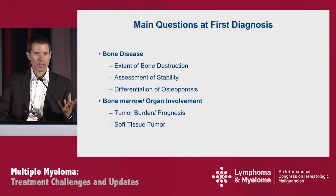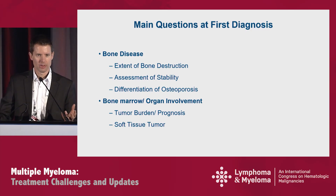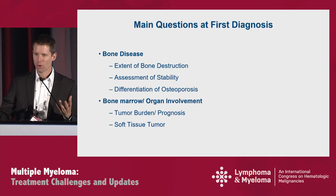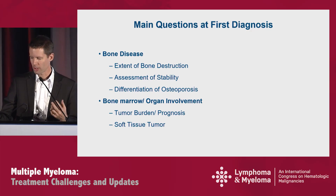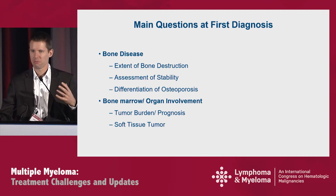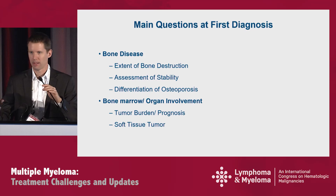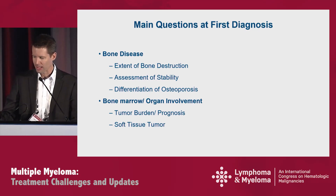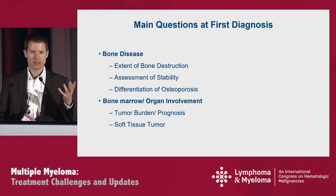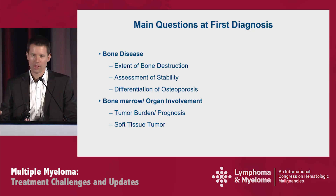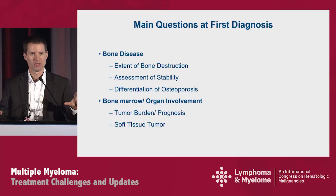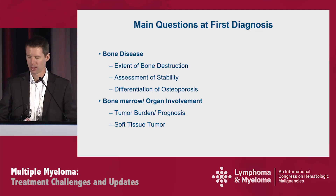What are the questions we have when a patient comes to us at first diagnosis? Most of them come with back pain. We need to know: what is the extent of bone destruction? Are there any instabilities? Is there a risk of fracture, or has a fracture already occurred? Is osteoporosis caused by myeloma or by hormonal changes — maybe in an elderly lady? And how much bone marrow is involved? As Gareth showed, myeloma is not homogeneously distributed in the bone marrow. It can be patchy, it can be in focal lesions, and it can even be in the soft tissue.